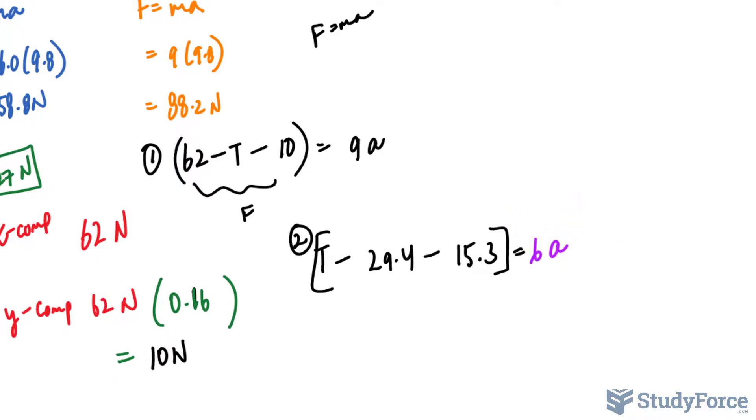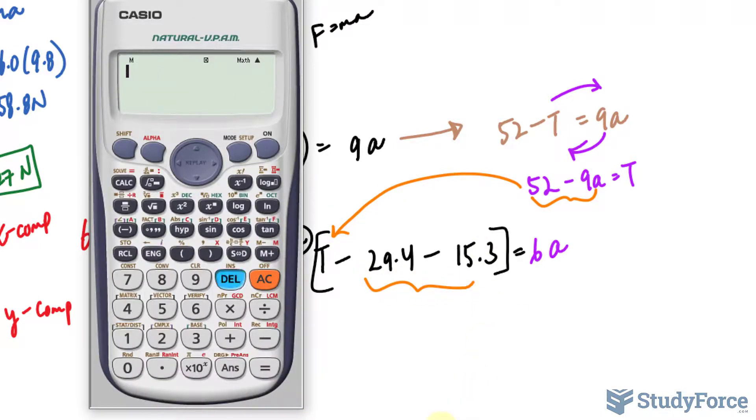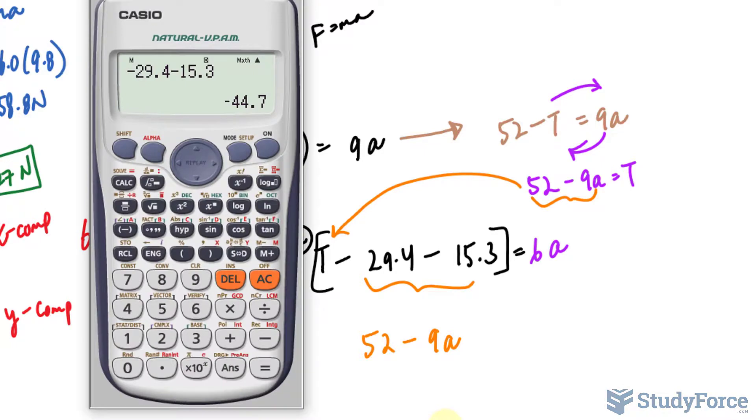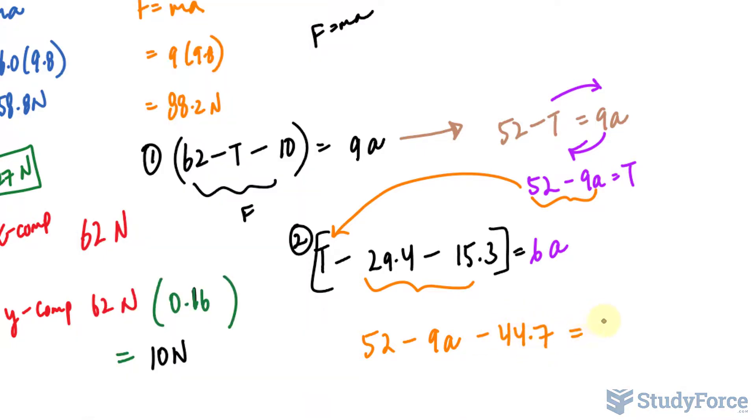Now it's a matter of solving for a and T. And for that, let me just simplify equation number one. If we simplify it, we have 62 minus 10, that's 52 minus T is equal to 9a. I will take this T here and this 9a over here where I have 52 minus 9a equals T. I will substitute that expression right into T and at the same time, simplify those two numbers. So I have negative 29.4 minus 15.3 and that is equal to negative 44.7. So remember, this T is now replaced with that, 52 minus 9a. And these two combined was minus 44.7 equals 6a.